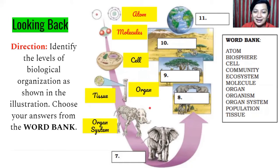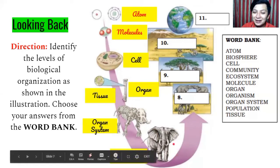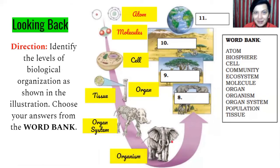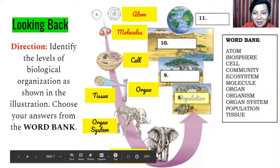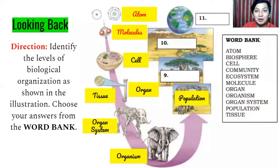Organ systems grouped together form an organism. So an elephant is an organism. Plants, animals, and including humans are organisms. Group of organisms can make a population. And group of populations is what we know as community.